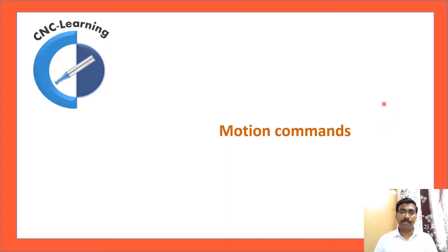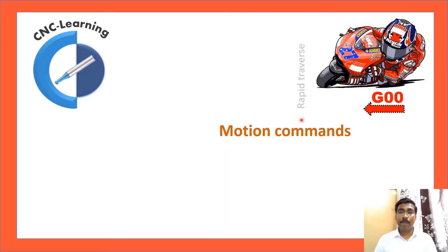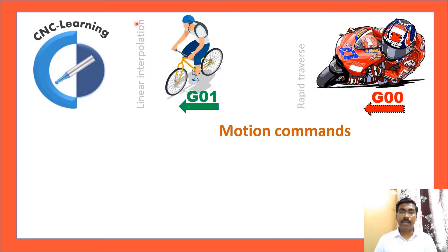Now we will see motion commands, which are the most important commands. There are several G-codes, but you need not know all of them — most of the time only about 10 to 15 codes are used; others are supporting or default. G0 is rapid traverse — fast movement, like a superbike — used only for positioning, not for cutting. G01 is linear interpolation with a feed rate — used for cutting movement, like a bicycle.